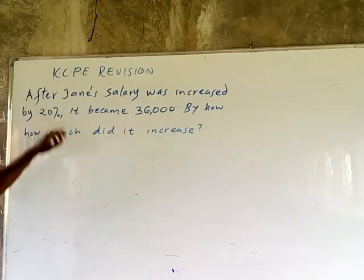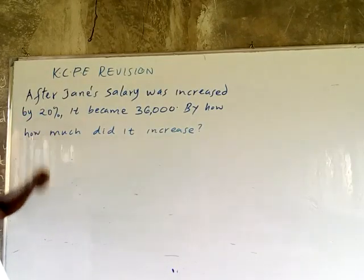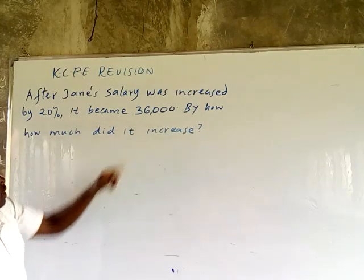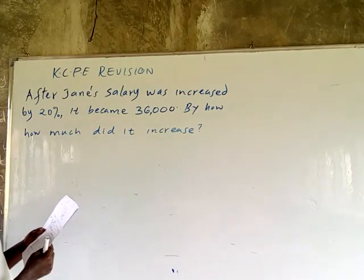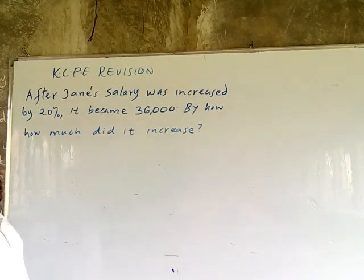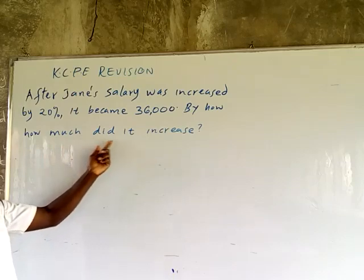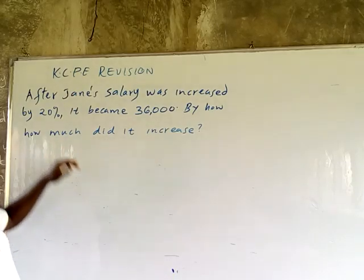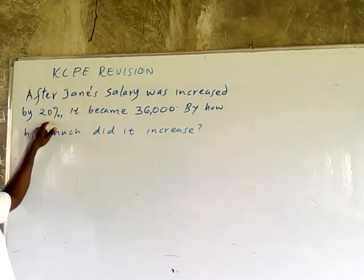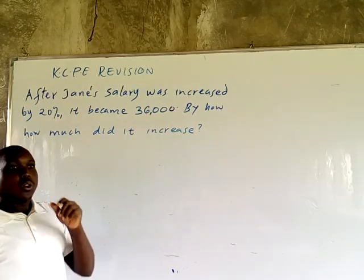After a salary was increased by 20%, it became 36,000. By how much did it increase? When a salary is increased by 20%, the new salary is 36,000.